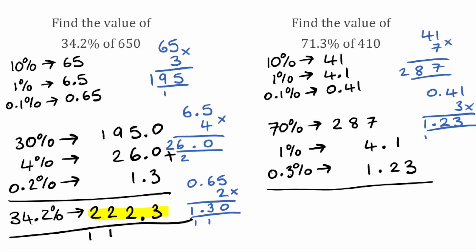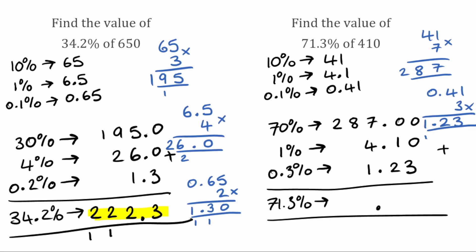Now we add these columns together to find our 71.3%. Putting everything to two decimal places: starting from the right, 0 add 0 add 3 is 3; 0 add 1 add 2 is 3; 7 add 4 is 11, add 1 is 12 — so 2 carry 1; 8 add the carried 1 gives us 9; and then 2 at the front. So our final answer to 71.3% of 410 is 292.33.